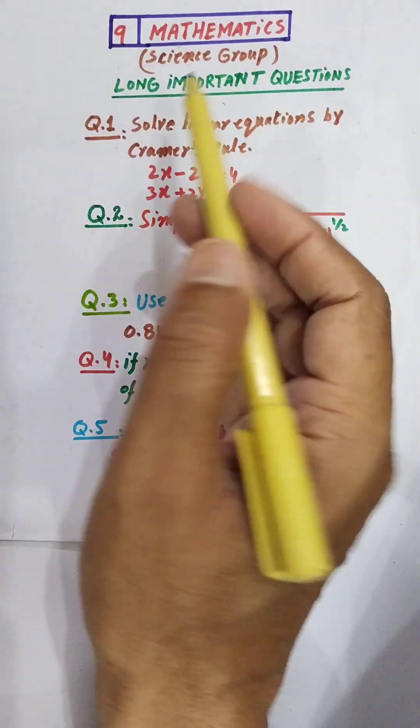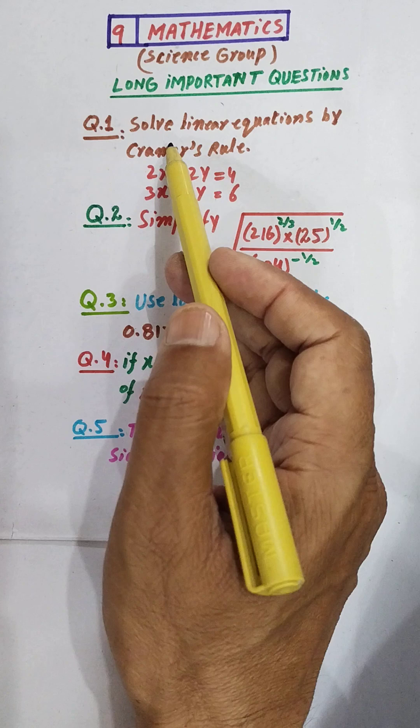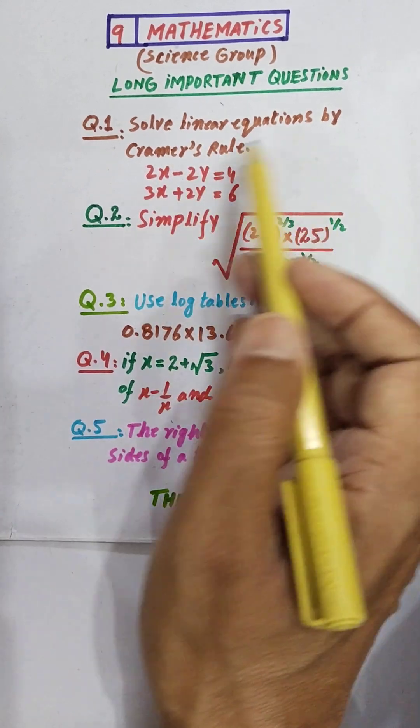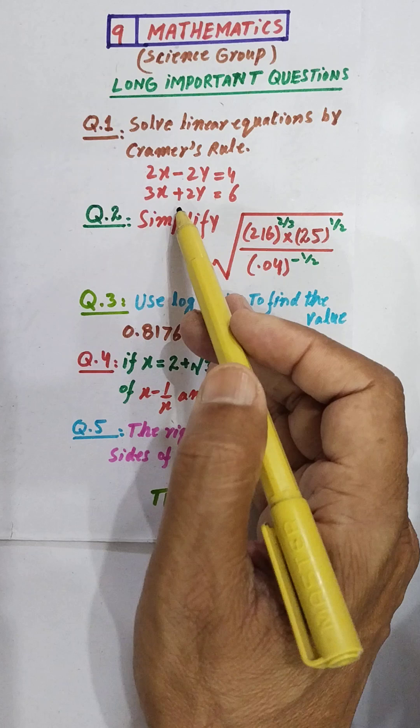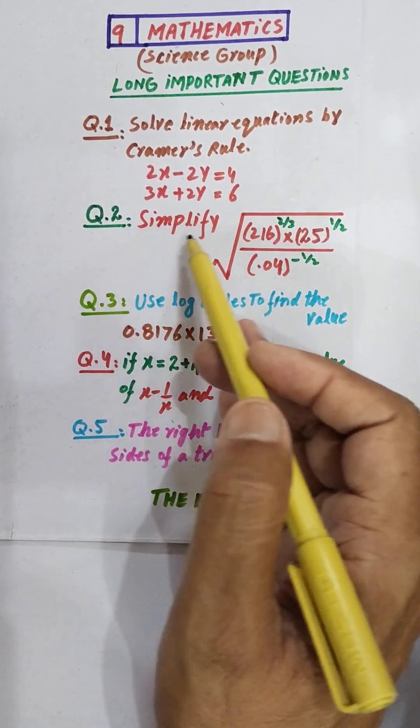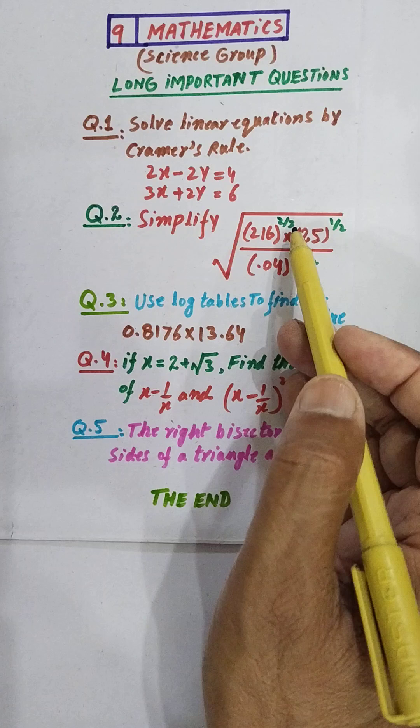For you dear students, today's topic is long important questions. Question 1: Solve linear equations by Cramer's rule. 2x minus 2y equals 4, 3x plus 2y equals 6. Question 2: Simplify 216 power 2 over 3 multiply 25 power 1 over 2, over